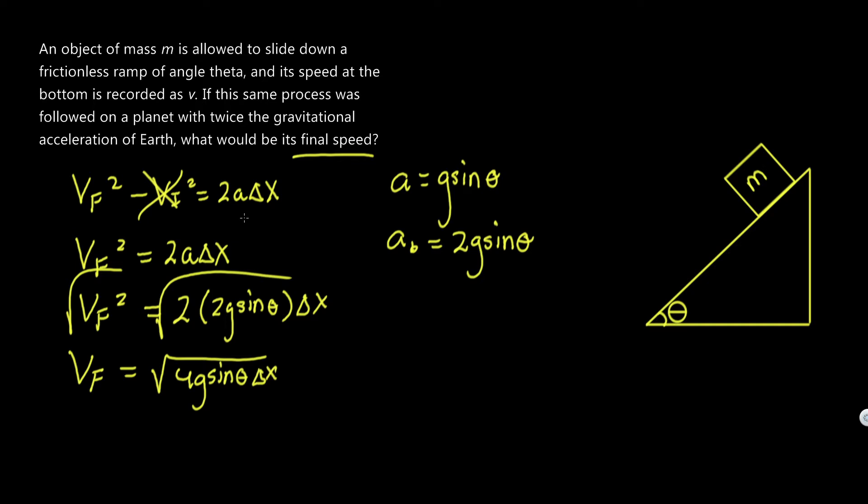Now what they were asking for is relative to v, like the initial one without double gravity, what would be the final speed. So this is the modified speed. Now let's go back to treat it as if there were nothing special going on. So we would instead just use a instead of a sub b, and we would have v final squared, instead of having it be 4g sine theta delta x, we just have it be 2g sine theta delta x. Because this time, we're not multiplying it by 2, we're just straight up plugging in g sine theta for a.